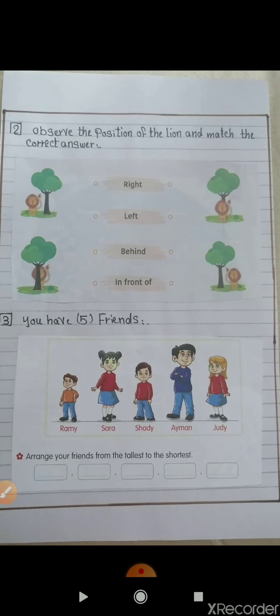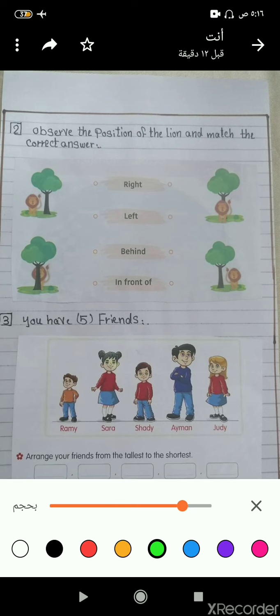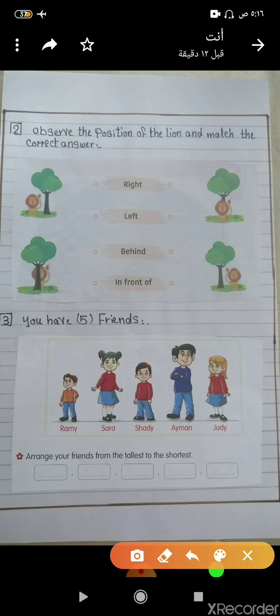The second question: observe the position of the lion and match the correct answer. We have here right, left, behind, and in front of.